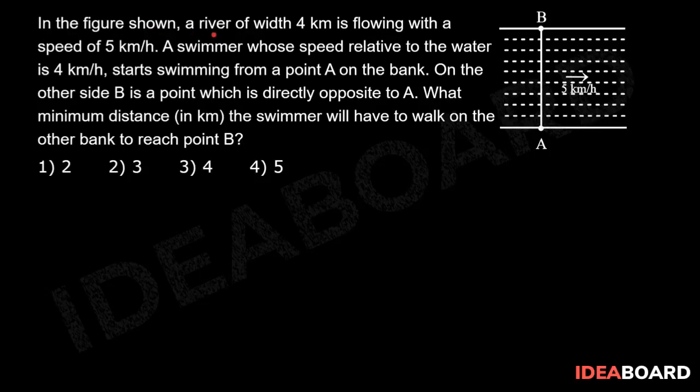In the figure shown, a river of width 4 km is flowing with a speed of 5 km per hour. A swimmer whose speed relative to the water is 4 km per hour starts swimming from a point A on the bank. On the other side B is a point which is directly opposite to A. What minimum distance in km the swimmer will have to walk on the other bank to reach the point B?